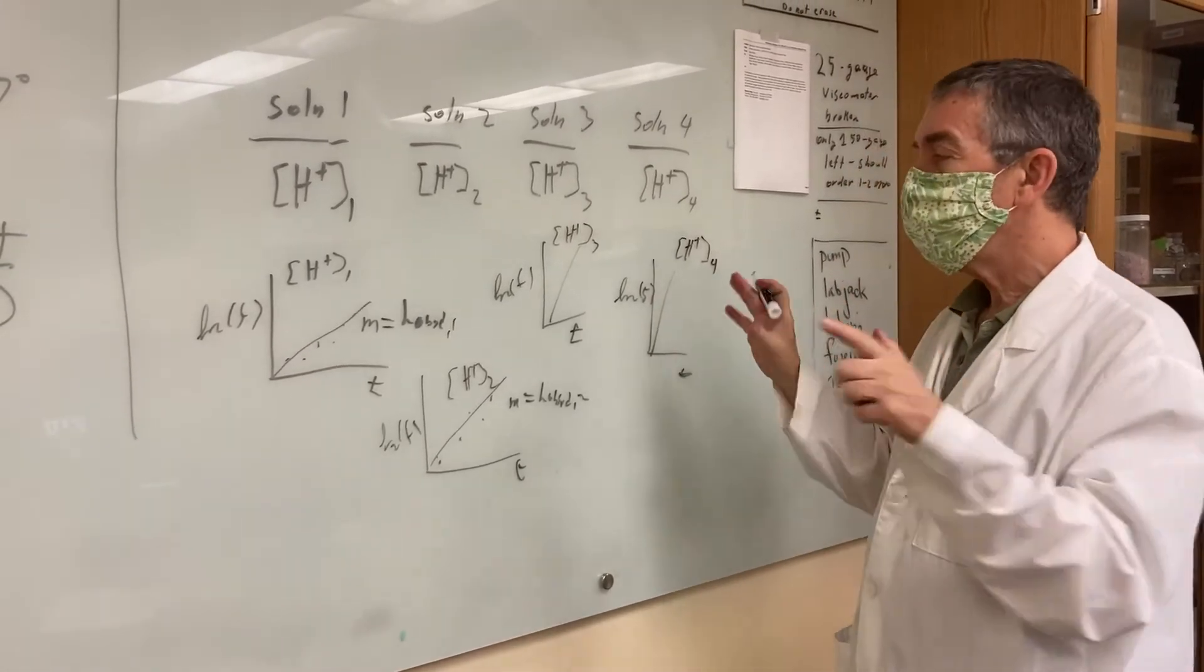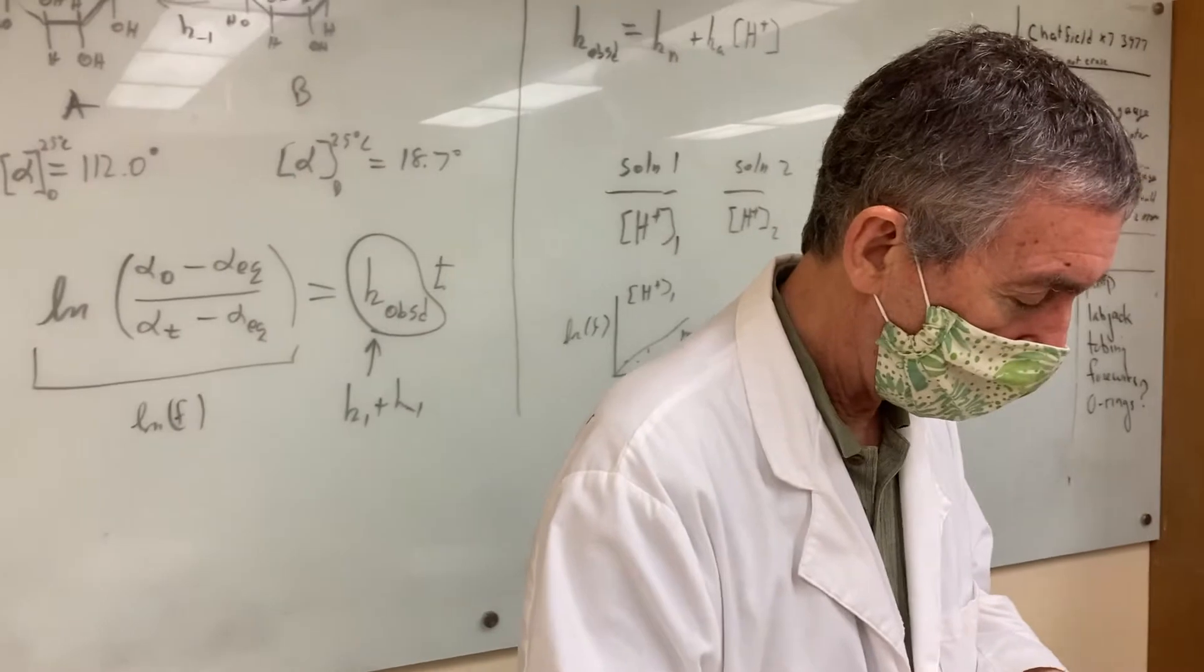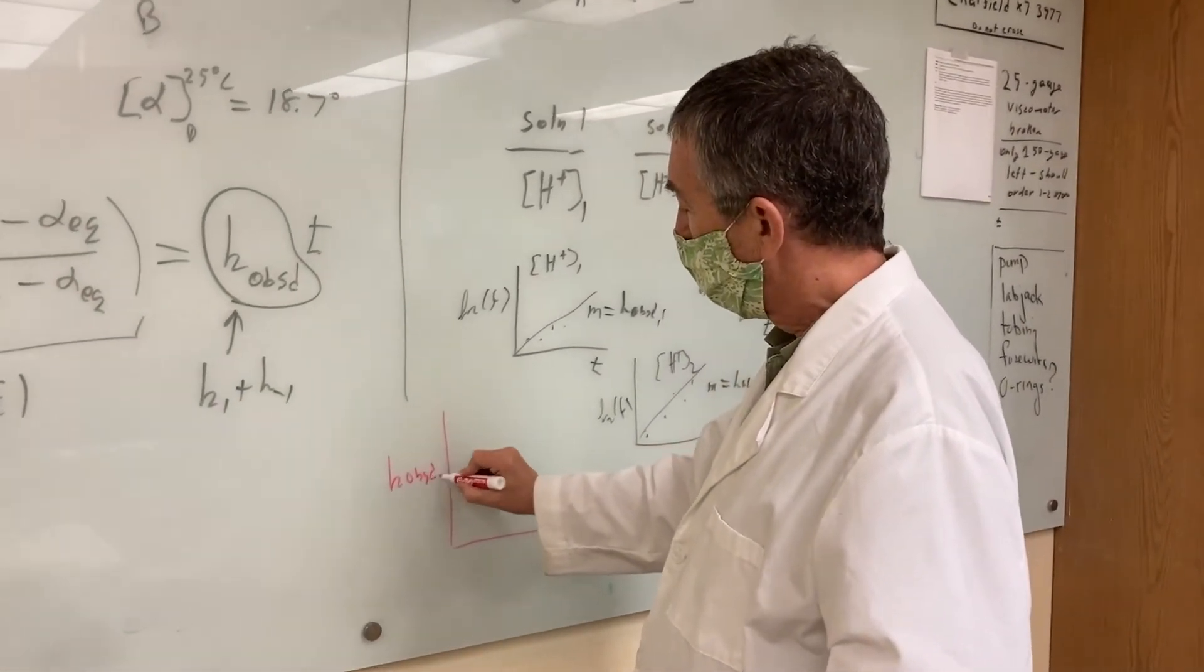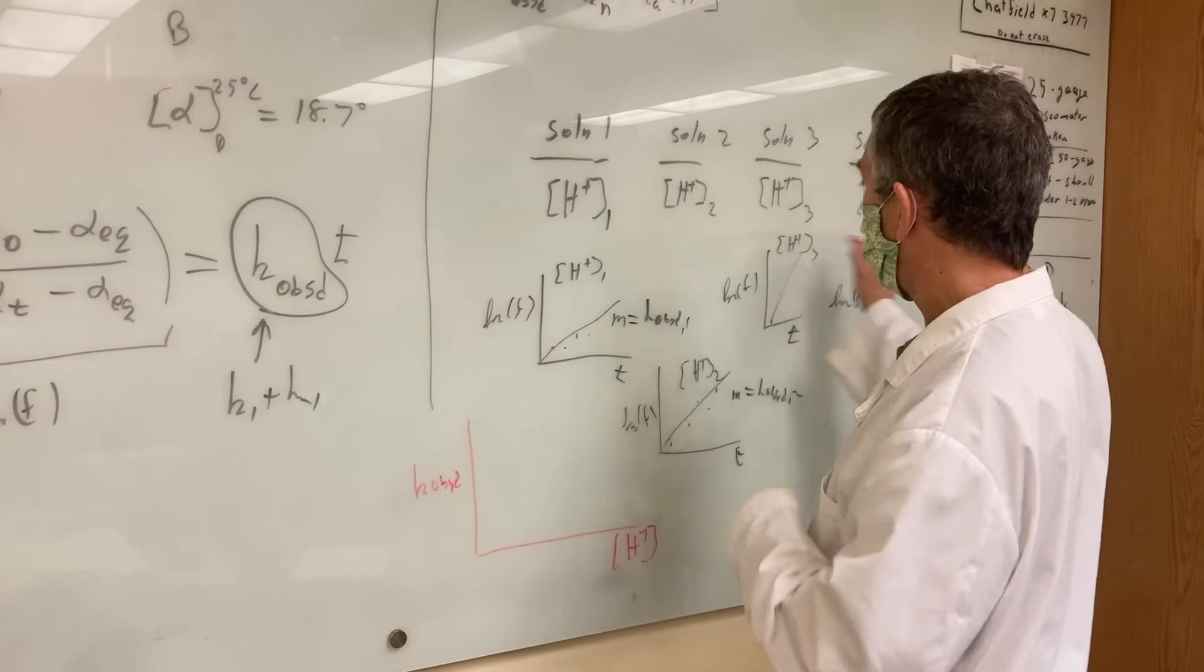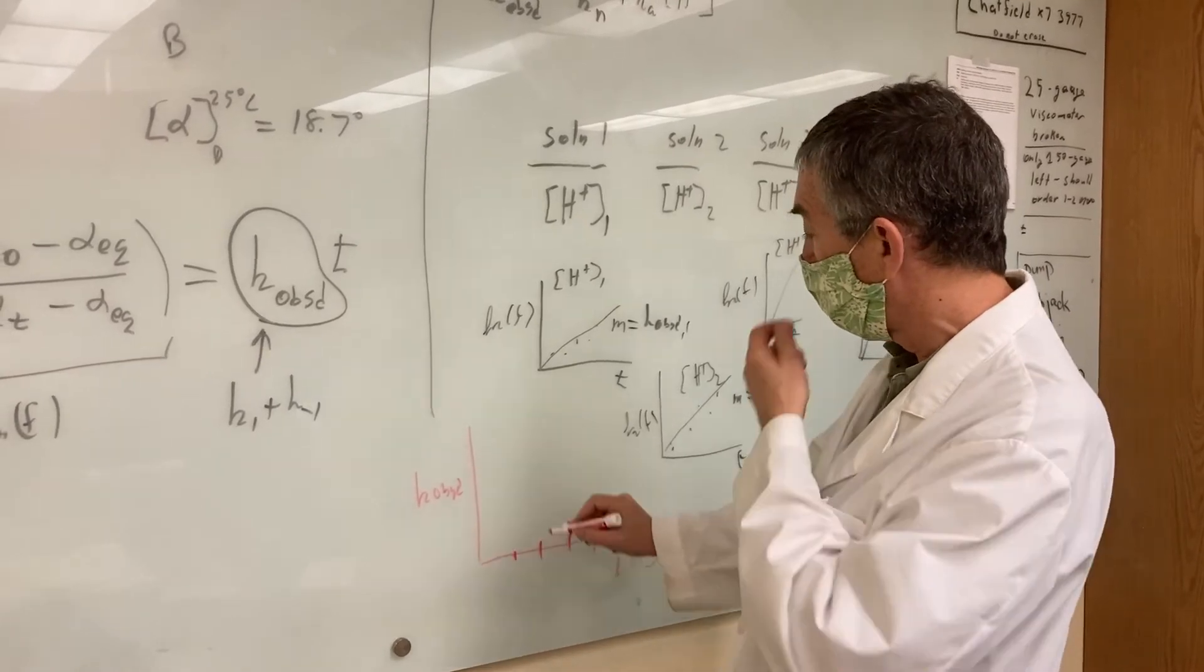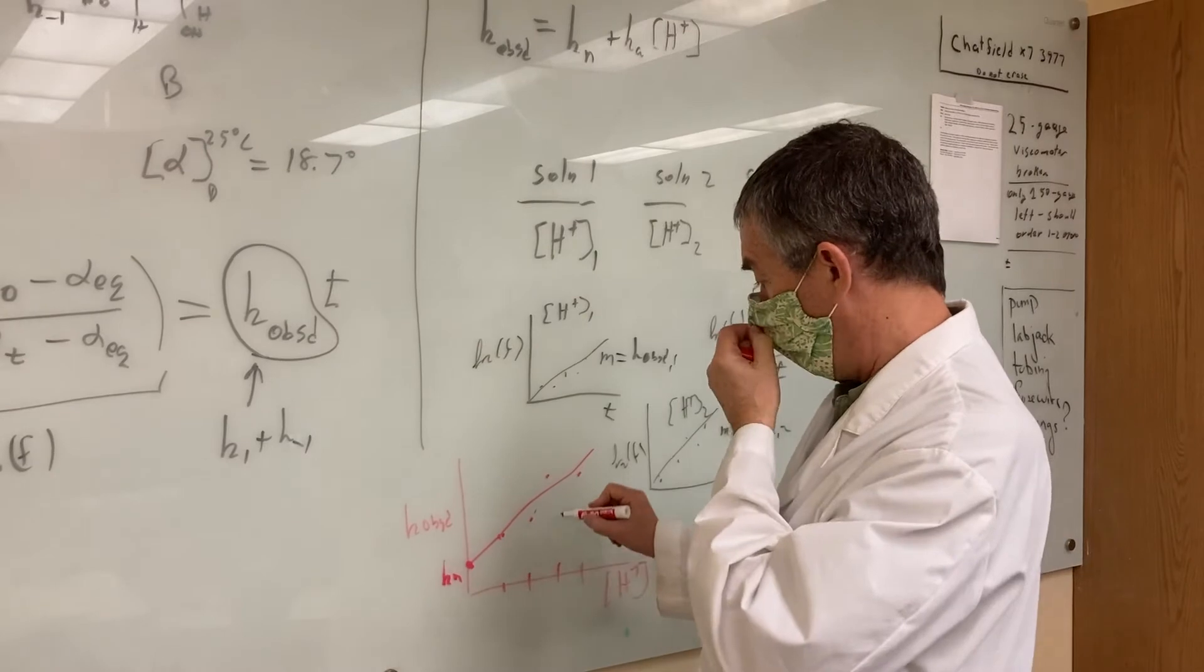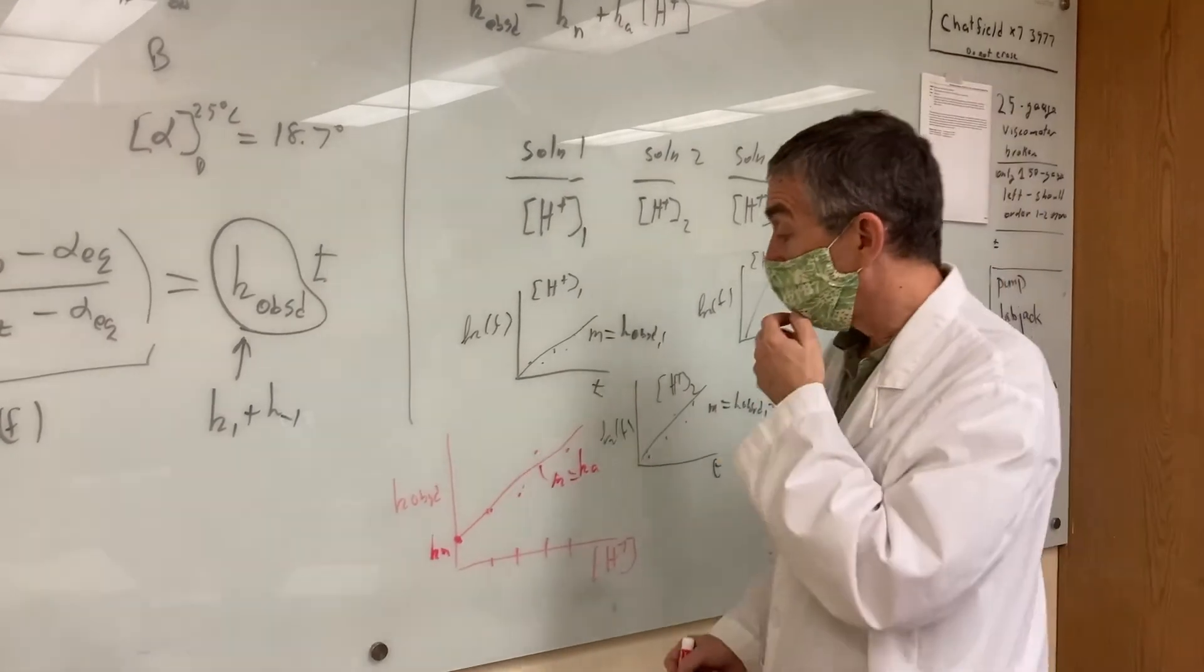Having done that, you put it all together, and we'll make one more plot. We'll do this one in red. Now, we're going to plot K observed versus H-plus concentrations. So, each of the slopes here is a K observed, and so you'll get, now, you're going to have four different values for your different H-plus concentrations. Maybe it looks like this. I don't know. Best fit line. The intercept is Kn, and the slope now is Ka. So, you get your Kn and your Ka.